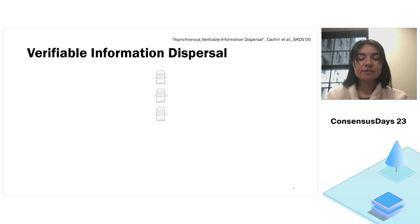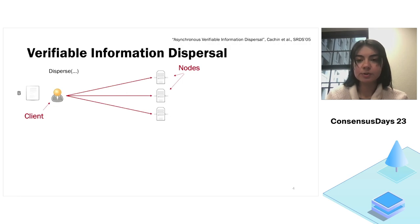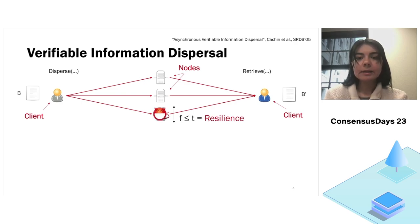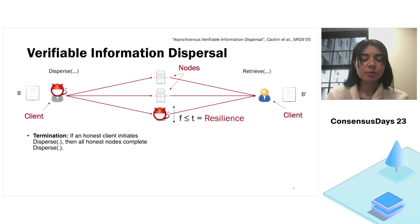So our first candidate is a verifiable information dispersal. So in verifiable information dispersal, we have the following setup. We have N nodes. We have a client that has some data B and wants to store this data among this set of nodes. And we have a client, could be a different client that wants to retrieve this data. And when it retrieves the data, it will reconstruct some block B prime, some data B prime. And some of the nodes up to T could be malicious. And the client that disperses the data could also be malicious. So VID is a primitive that consists of these two functionalities, disperse and retrieve, and also has four properties.